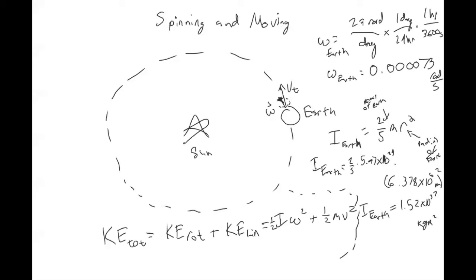So now the only thing we don't know in this equation is the tangential velocity of the Earth — we found the moment of inertia, we found omega, and we know the mass of the Earth. We'll calculate the tangential velocity on the next slide.